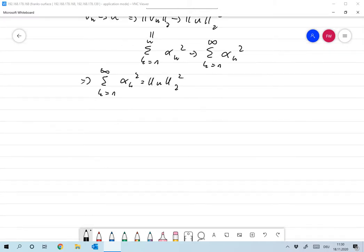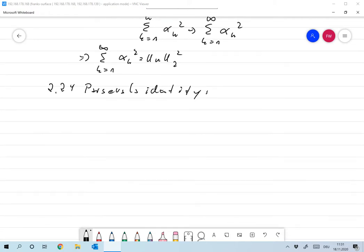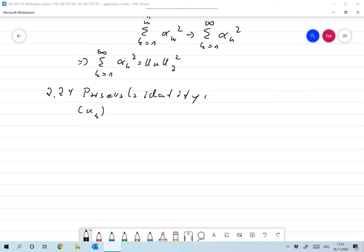This is also called Parseval's identity. A set UK is complete if and only if the norm of U squared is the sum over all K of U scalar product with UK squared.